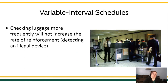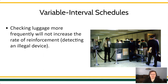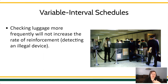Another variable interval schedule example is TSA. You're going through TSA — is this a ratio-based schedule or an interval-based schedule? It's definitely based on scanning luggage, but scanning luggage faster or doing more scans doesn't necessarily increase the probability that you're going to find an illegal device. I think this is one that's time-based. It doesn't matter what the TSA agent is doing — it's just dependent on others' responses.